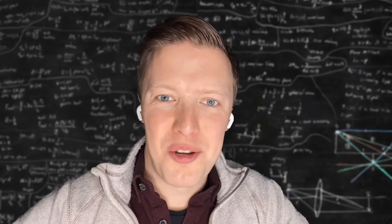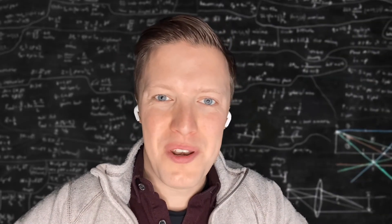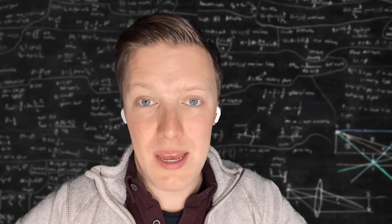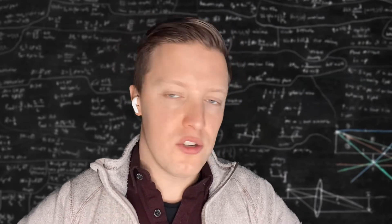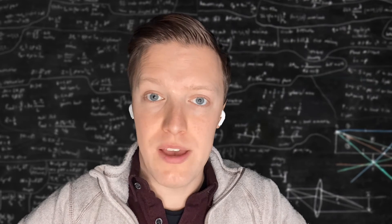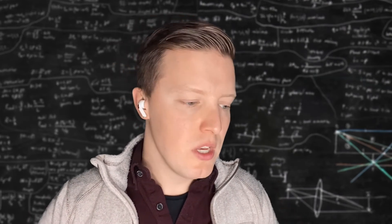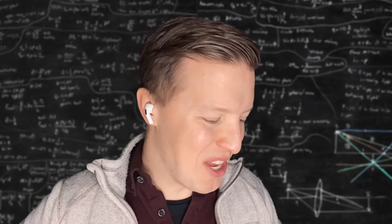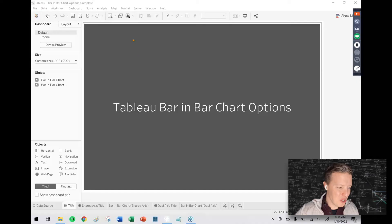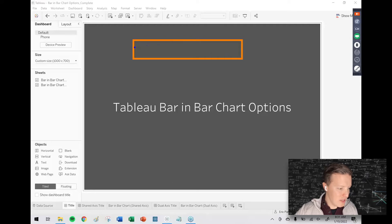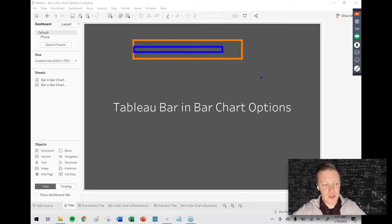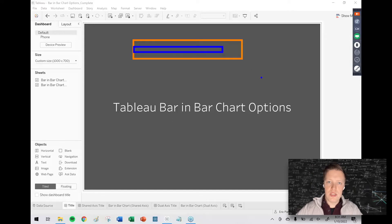Hey everybody, how's it going? This is Eric Parker with OneNumber, and for today's Tableau tutorial I want to dive into a couple of different options for creating a bar-in-bar chart in Tableau. Typically with a bar-in-bar chart you have one bar in the background and then a different colored bar in the foreground, and this type of visual is very helpful for comparing two measures.